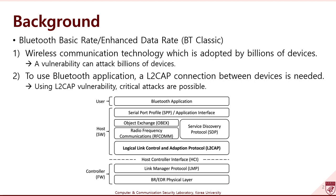With an L2CAP vulnerability, an attacker can exploit vulnerabilities related to Bluetooth applications. To guarantee the root of trust of Bluetooth devices, discovering L2CAP vulnerabilities is needed. There have been several Bluetooth fuzzing studies to discover vulnerabilities in the L2CAP layer. However, they did not discover vulnerabilities effectively because they did not test various L2CAP states and generate enough malformed packets.